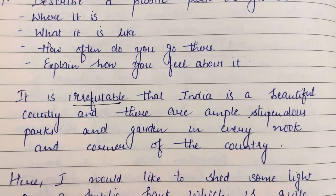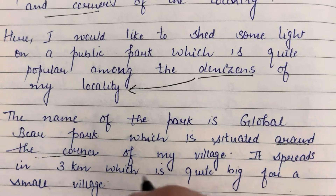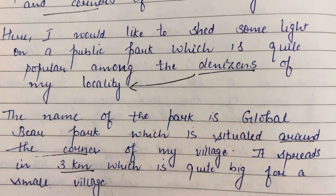Here I would like to shed some light on a public park which is quite popular among the denizens of my locality. 'Denizens' means the residents of a place — in this case, the people of my locality. The name of the park is Golden Bear Park, which is situated around the corner of my village — meaning very nearby. It spreads over three kilometers, which is quite big for a small village.